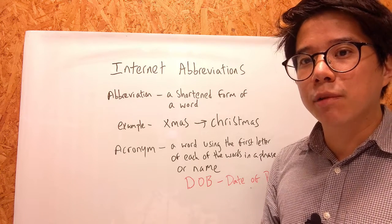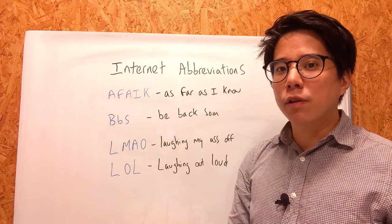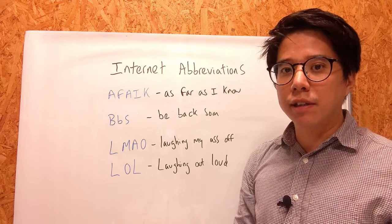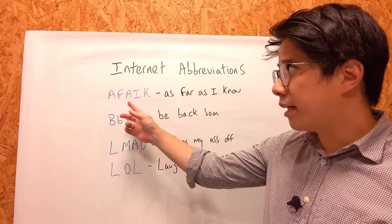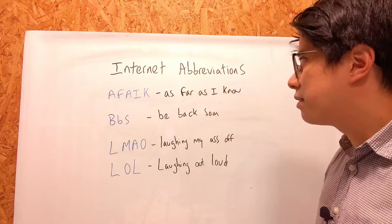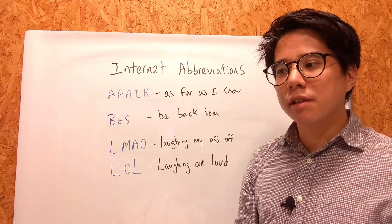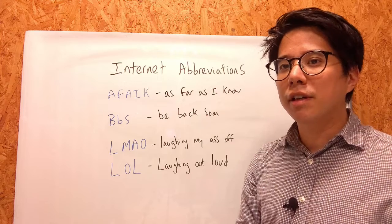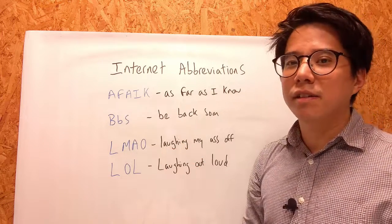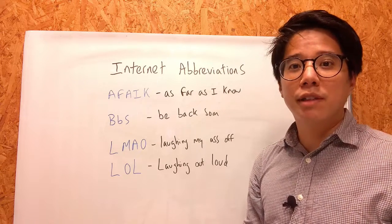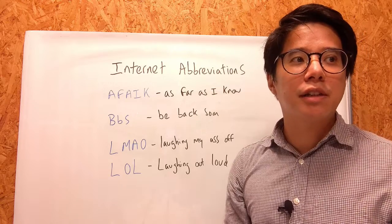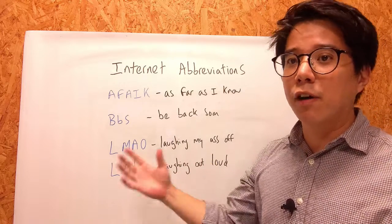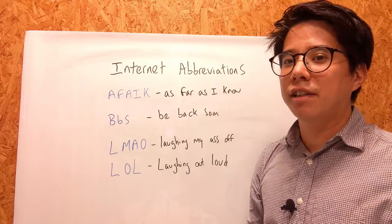Okay, so I'll get into the examples now. The first internet abbreviation is AFAIK, which means as far as I know. When you're writing something on the internet or social media and you're not 100% sure about what you're talking about, you might write AFAIK. For example, if someone asks what is the birthday of so-and-so friend, you can write AFAIK, I think it's on Friday — as far as I know, it's on Friday — because you're not 100% sure.